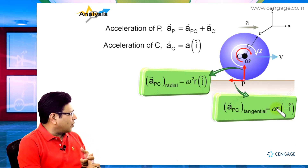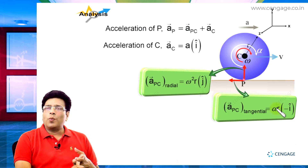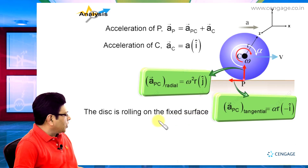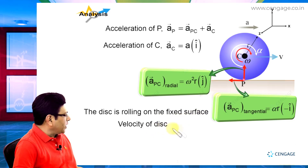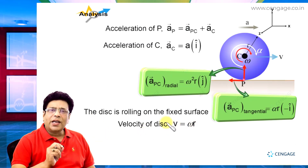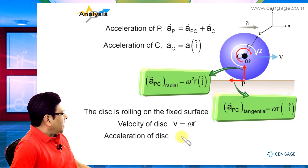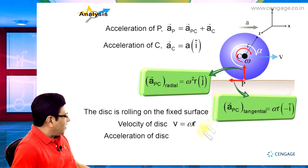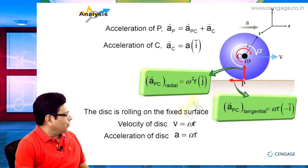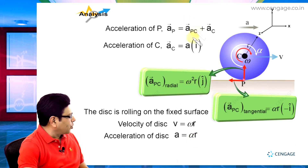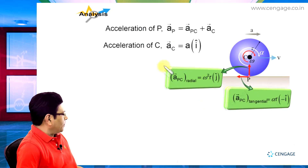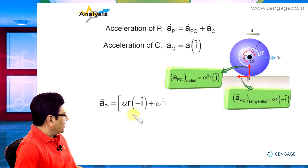The disk is rolling on a fixed surface, so the constraint for rolling motion is v equals omega r, where v is the velocity of the centre of mass and omega is the angular velocity. Similarly, we can write the acceleration constraint for rolling: a equals alpha r, where a is the linear acceleration of the centre of mass and alpha is the angular acceleration. Now let us substitute: the acceleration of P with respect to C has the i-cap component and the j-cap component, giving: acceleration of P with respect to C equals (a minus alpha r) î plus omega² r ĵ.